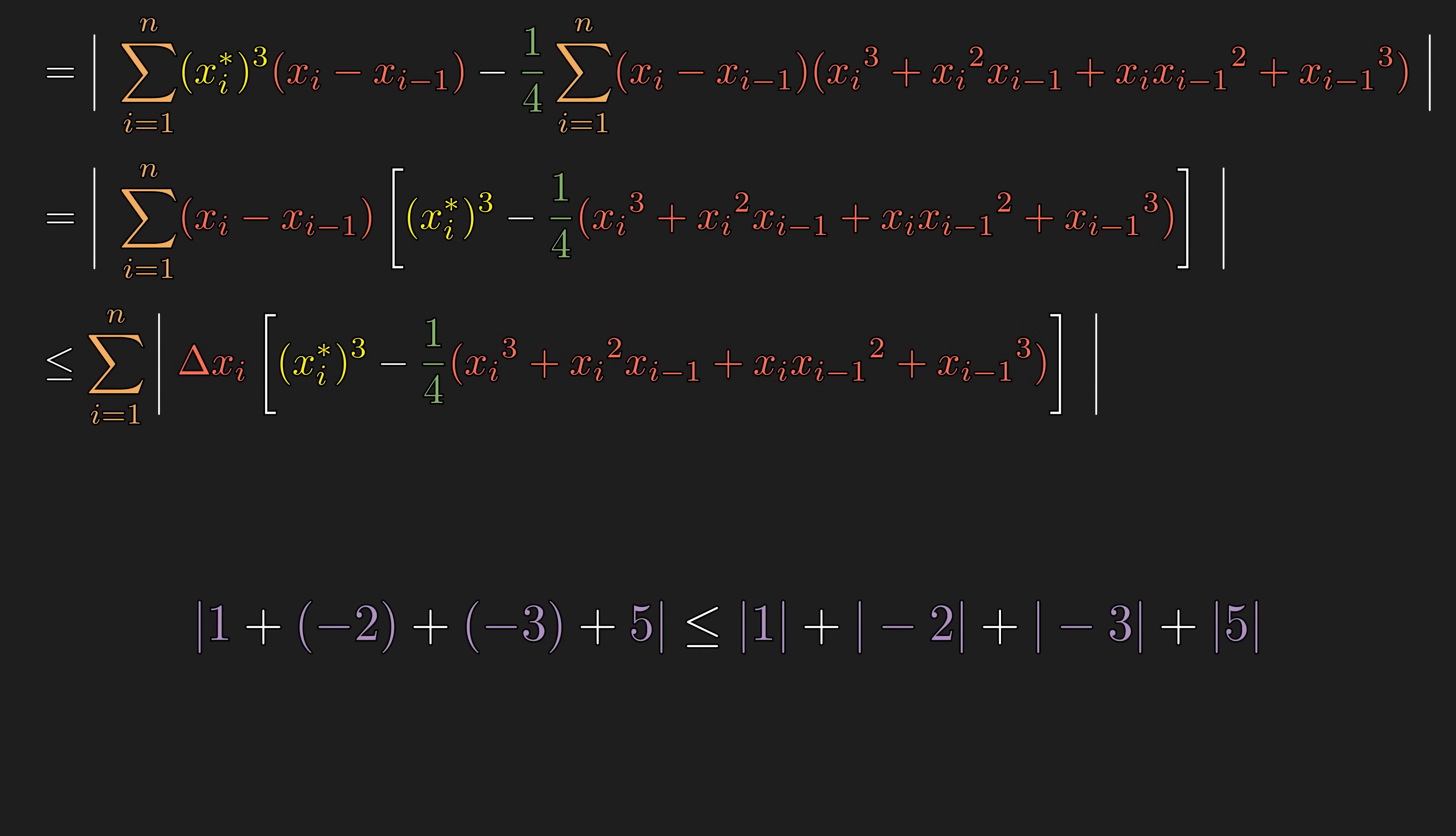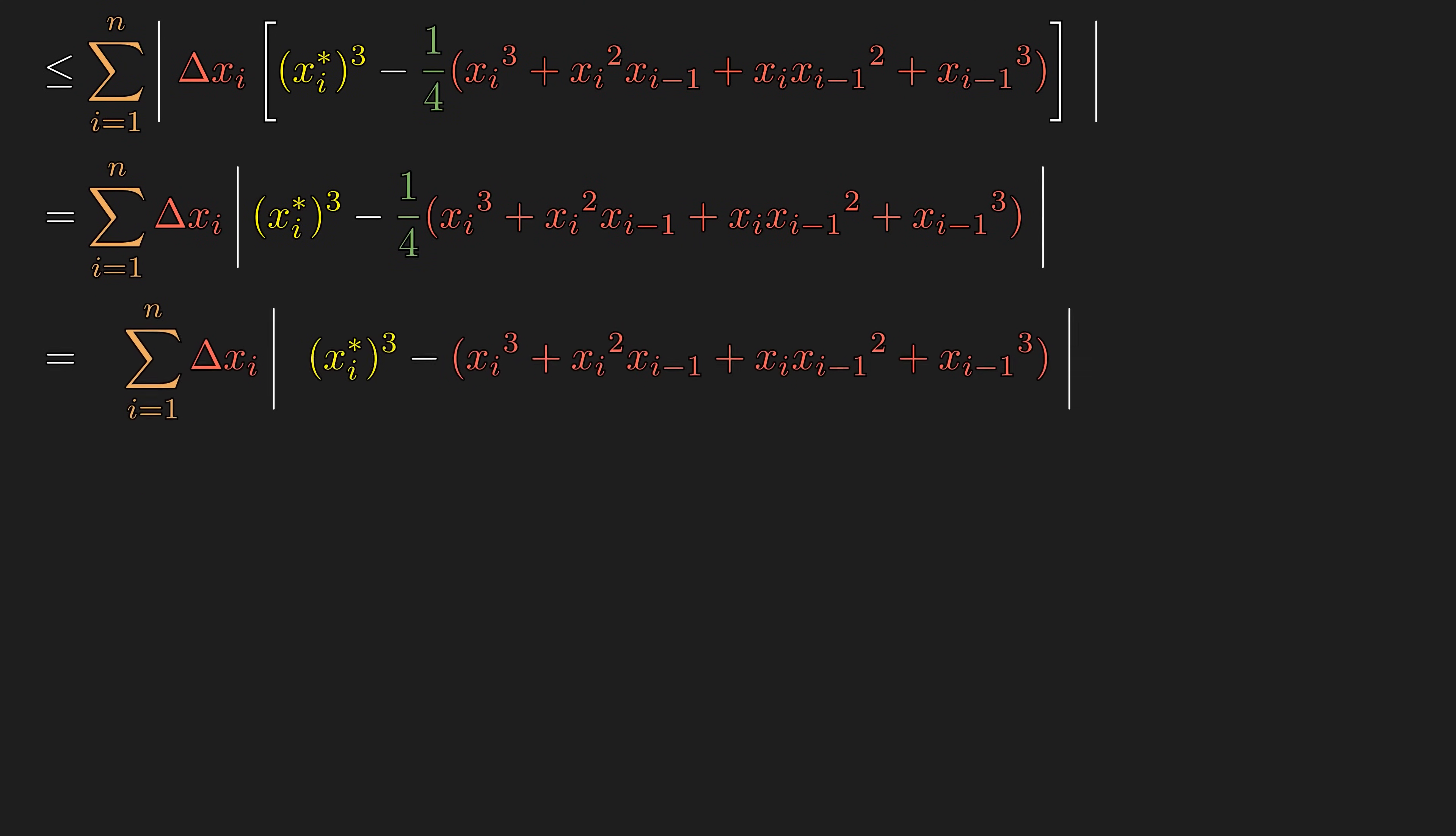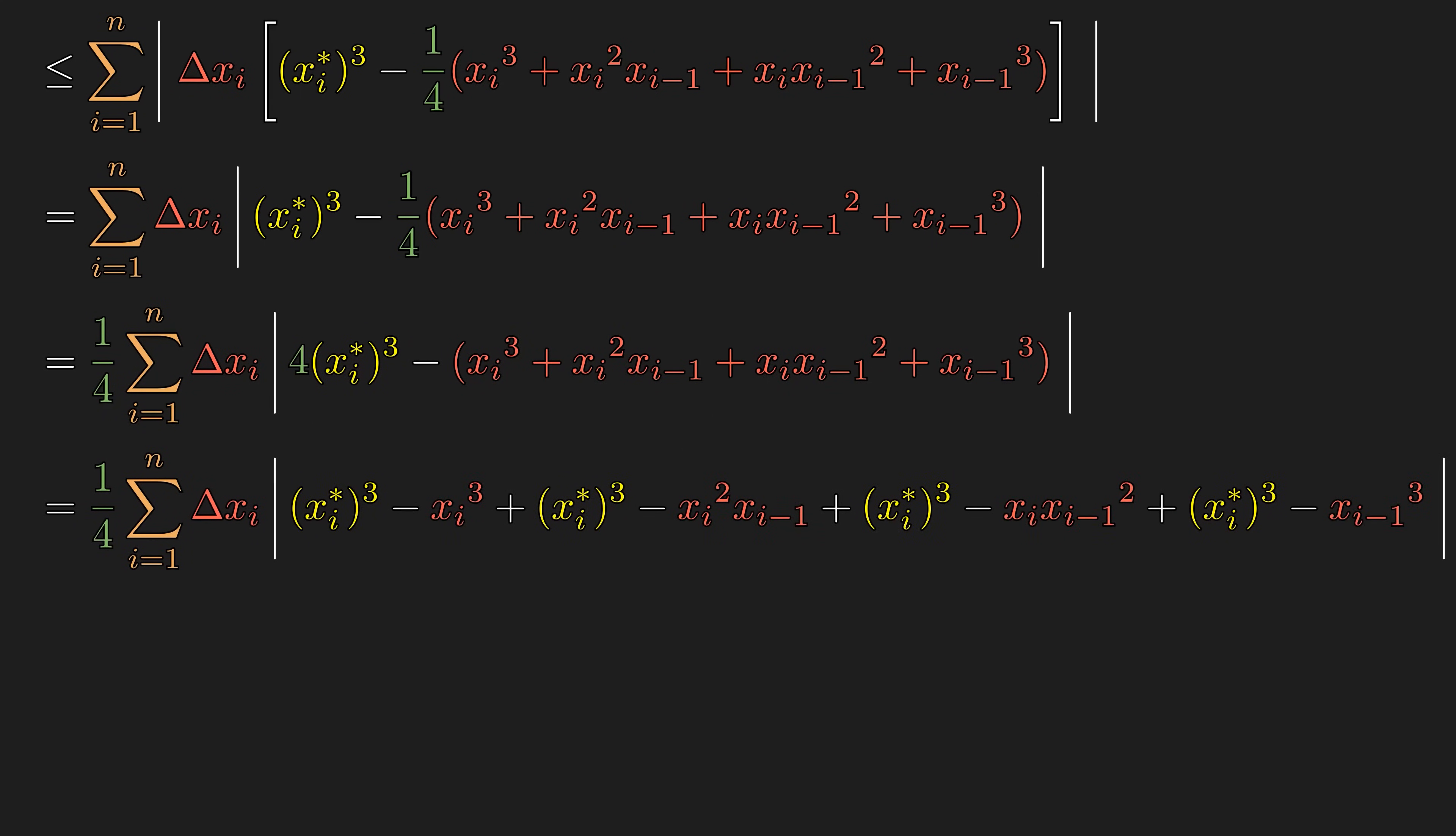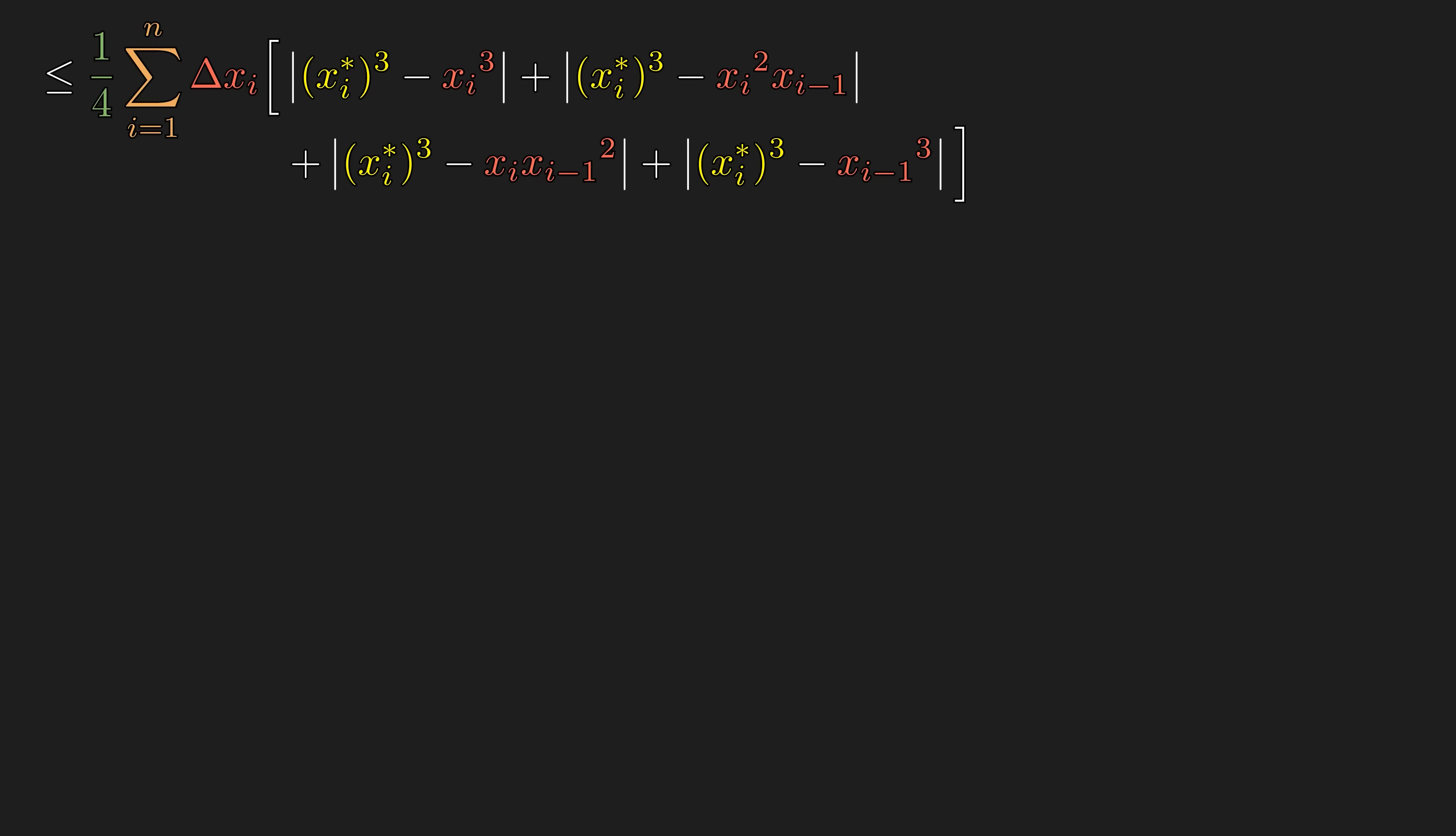Next, we are going to condense our notation a little. Then, we can pull out the length of each subinterval from the absolute value, since it is a positive number. Then, we are going to factor out one-fourth. Since there are four copies of the tag cubed, we can pair it up with each term of what's being subtracted. Next, we will apply triangle inequality again on each of the differences.